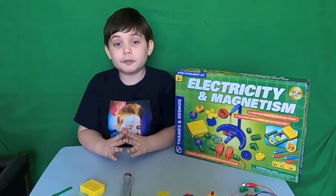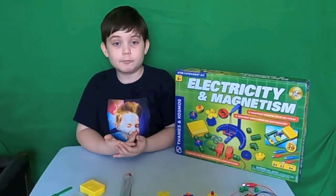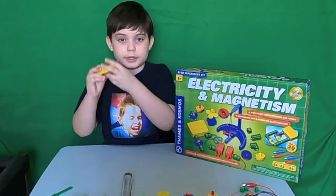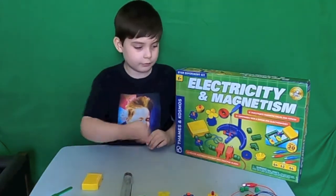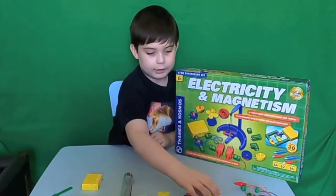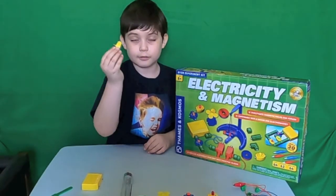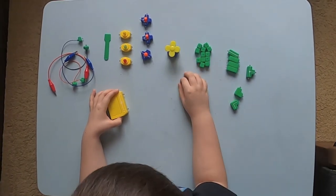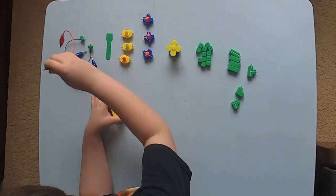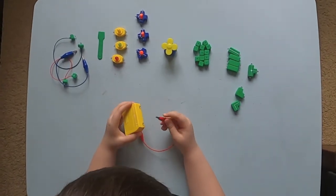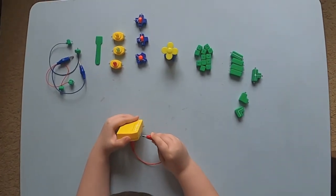Let's build a circuit using the kit. First, let me build a simple circuit with the yellow battery box, alligator wires, and a light. Here I go. Building a basic circuit with the yellow battery box powered with two AA batteries, alligator clip wires, and a yellow light.